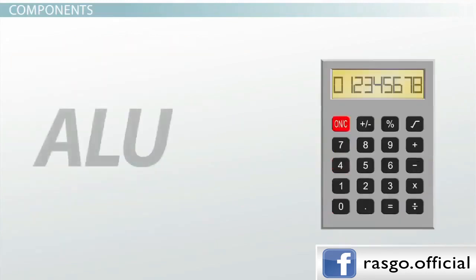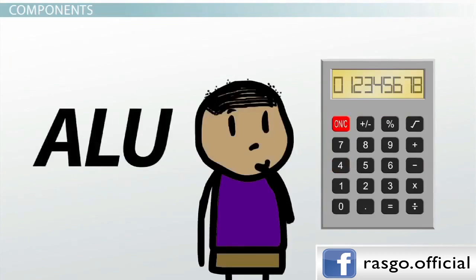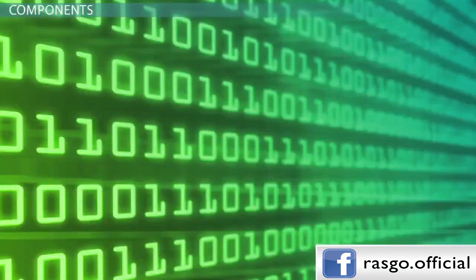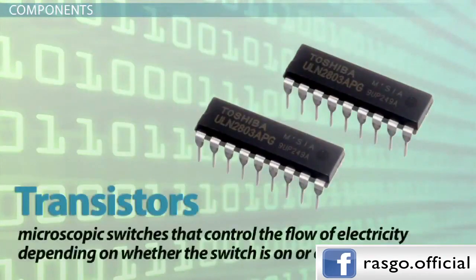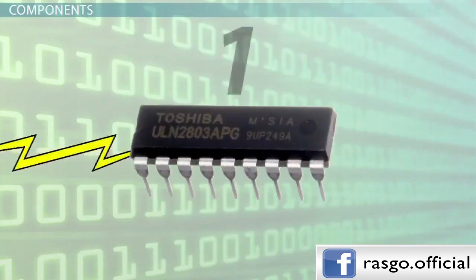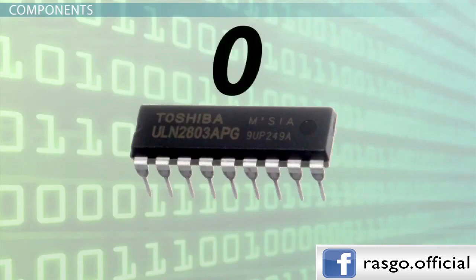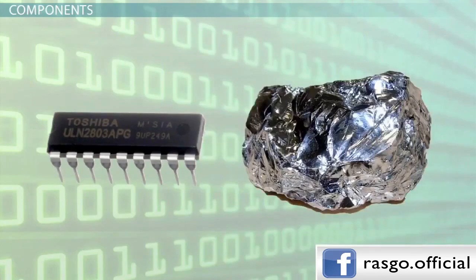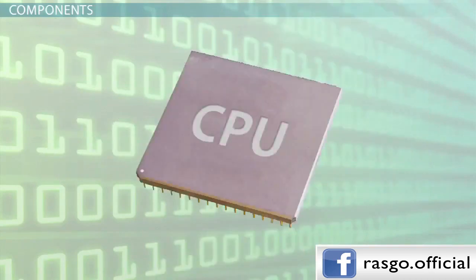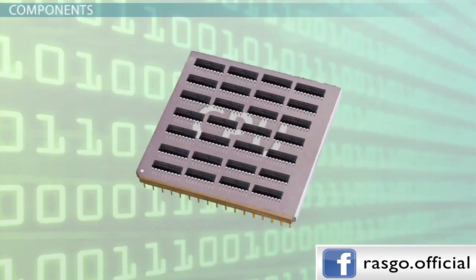The ALU is where the calculations occur, but how do these calculations actually get carried out? To a computer, the world consists of zeros and ones. Inside a processor, we can store zeros and ones using transistors. These are microscopic switches that control the flow of electricity depending on whether the switch is on or off, so the transistor contains binary information — a 1 if a current passes through, and a 0 if a current does not. Transistors are located on a very thin slice of silicon. A single silicon chip can contain thousands of transistors, and a single CPU contains a large number of chips. In a modern CPU, that square inch can hold several hundred million transistors. The very latest high-end CPUs have over one billion.